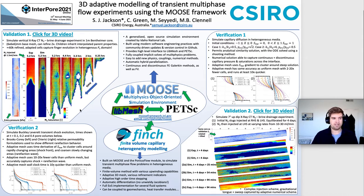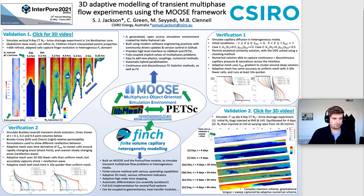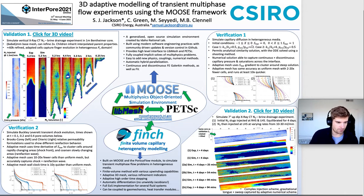The first validation looks at nitrogen injection vertically into a one-metre-long Bentheimer core. You can see the saturation after five and a half hours and the complex bifurcated front that's forming. We simulated this in 3D — you can click the link on the poster for a 3D video. The 2D slices shown here demonstrate how nicely the mesh adapts around the interface; if you zoom in on the poster, you can see the refined cells adapting as the interface moves, and we capture this front quite well in the simulation.